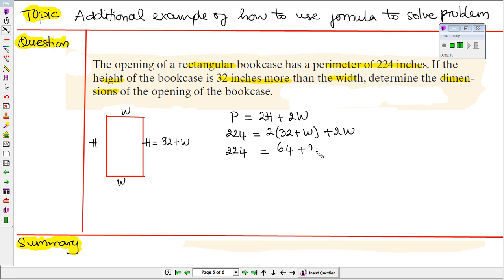So no more parentheses, and copy the last term. Next, we copy 224 on the left side. On the right-hand side, we are going to combine like terms, so 2w plus 2w will be 4w.